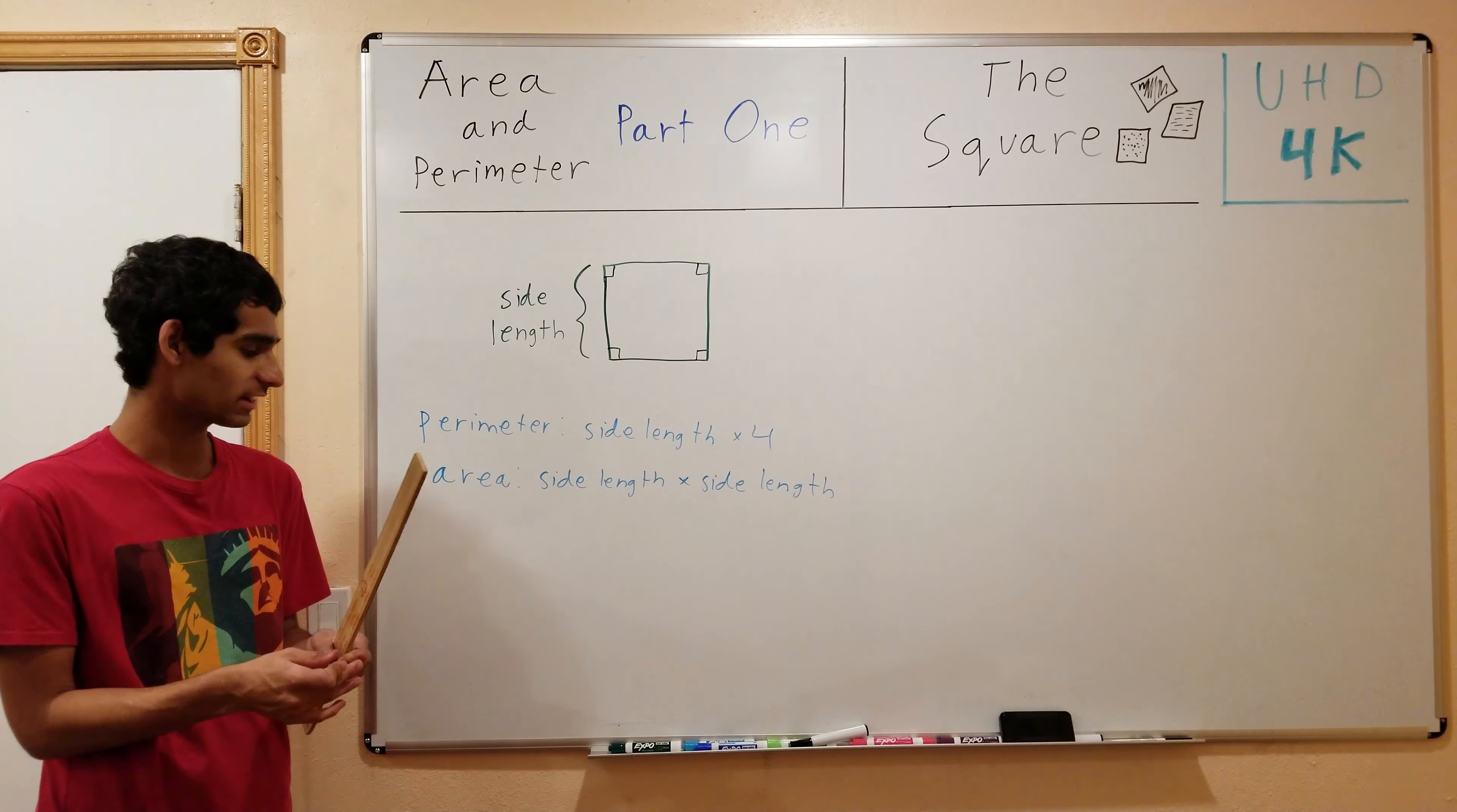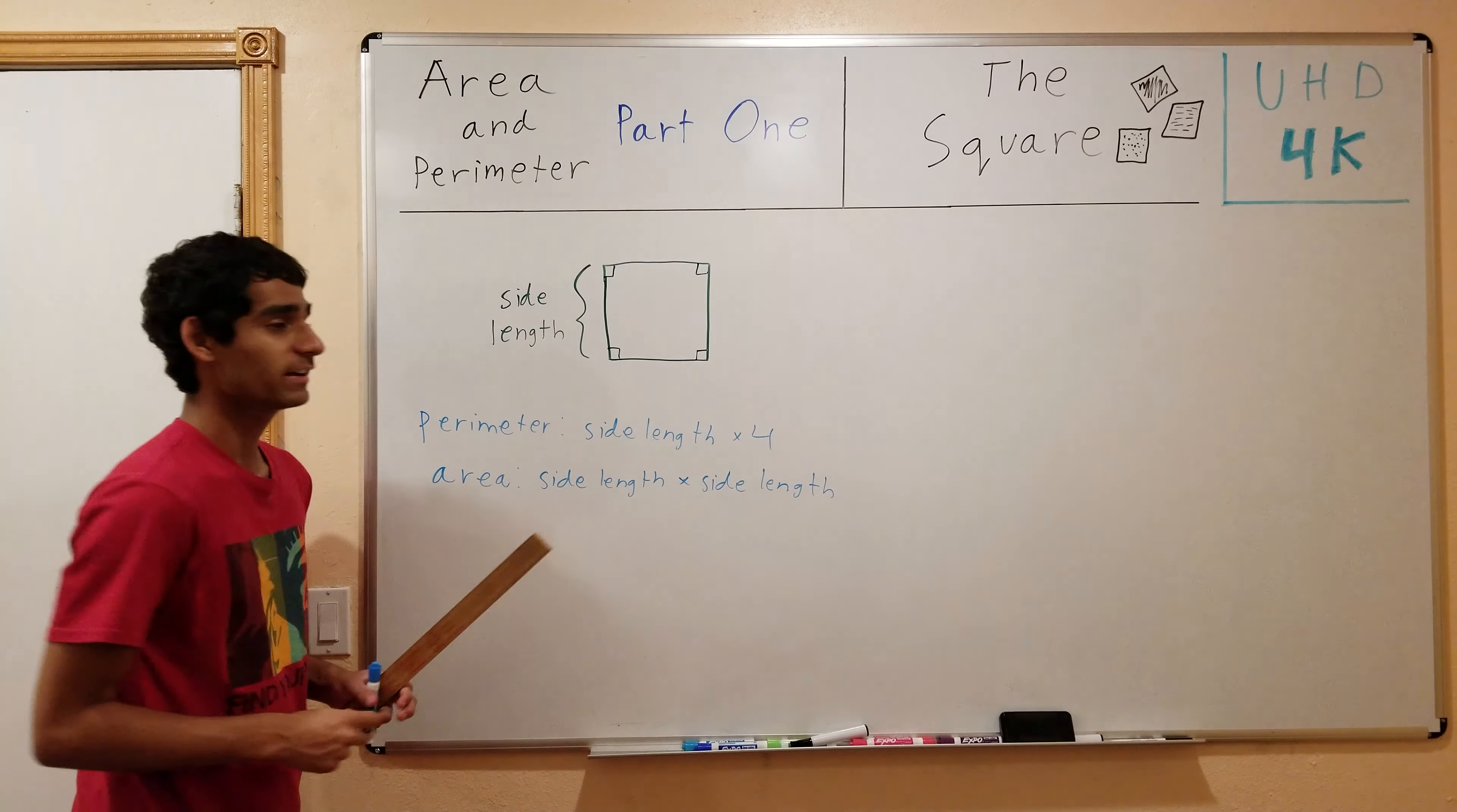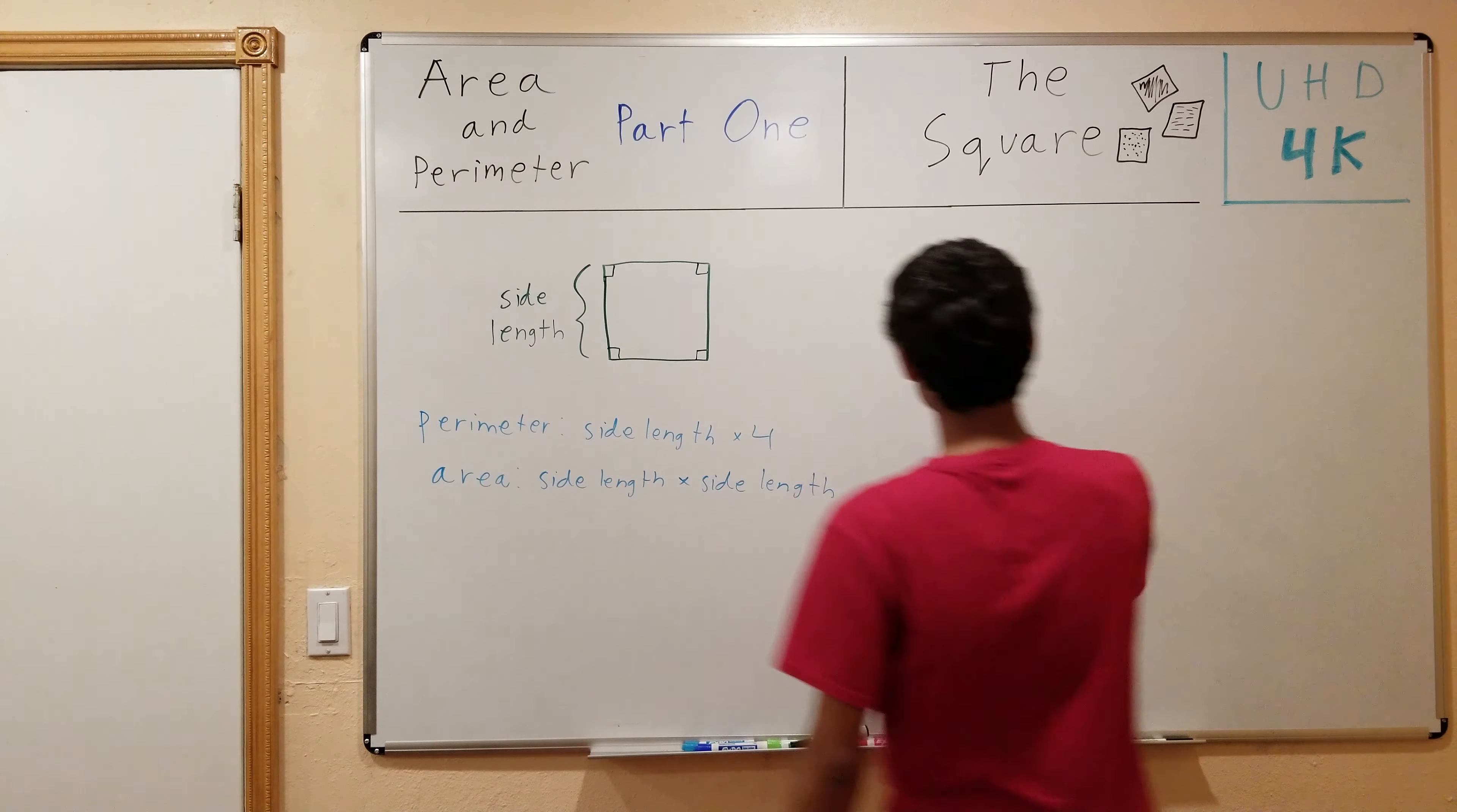So let's do a quick practice problem to calculate the area and perimeter of the square. So I have this square over here.